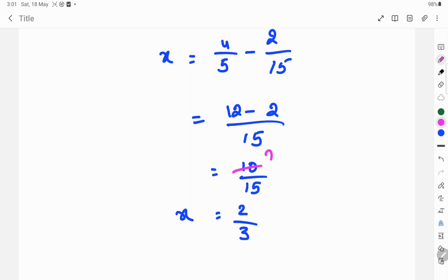10 cancels, 5 goes 2 times. 15 cancels in 3 times. So x is equal to 2 by 3.